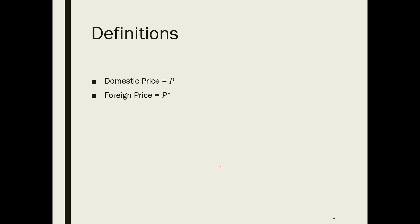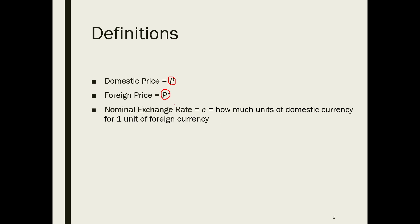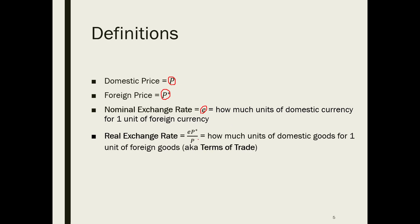To make the discussion easier, let's define some notations first. P stands for the domestic price level; P* is the foreign price level. The nominal exchange rate, denoted by E, is defined as how many units of domestic currency are needed to buy one unit of foreign currency. A higher nominal exchange rate means foreign currency is more expensive in terms of domestic currency. The real exchange rate is defined as E multiplied by P* divided by P, which effectively describes how many units of domestic goods are needed to buy one unit of foreign goods. A higher real exchange rate means foreign goods are more expensive in terms of domestic goods.